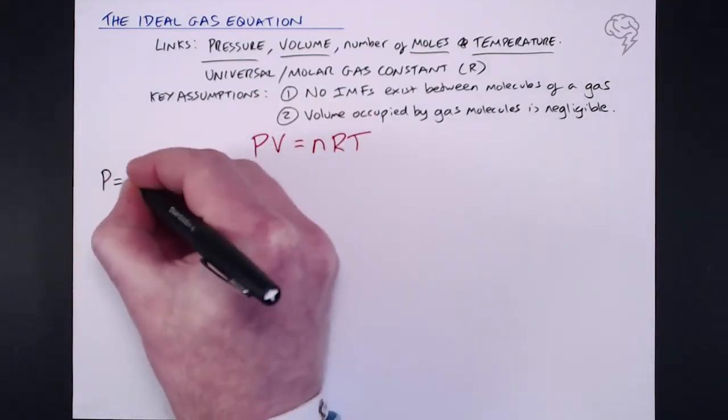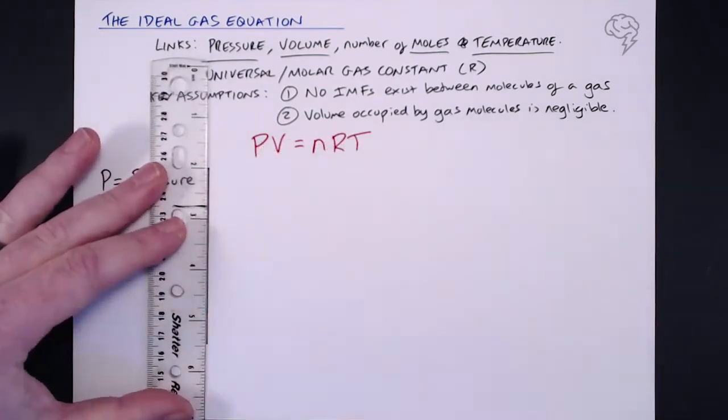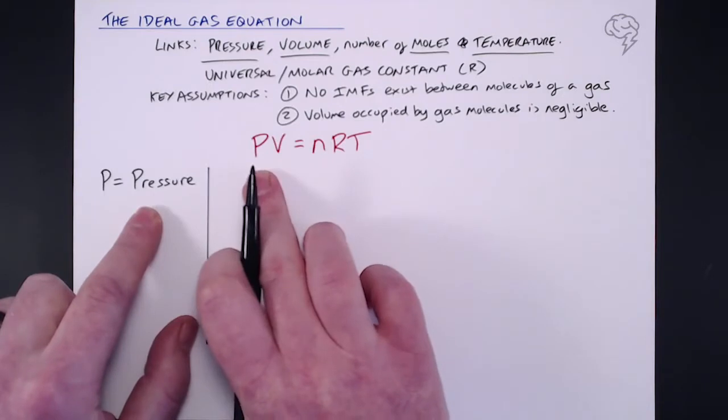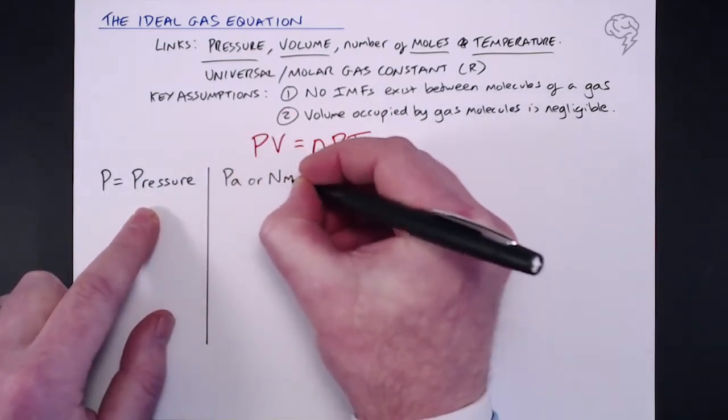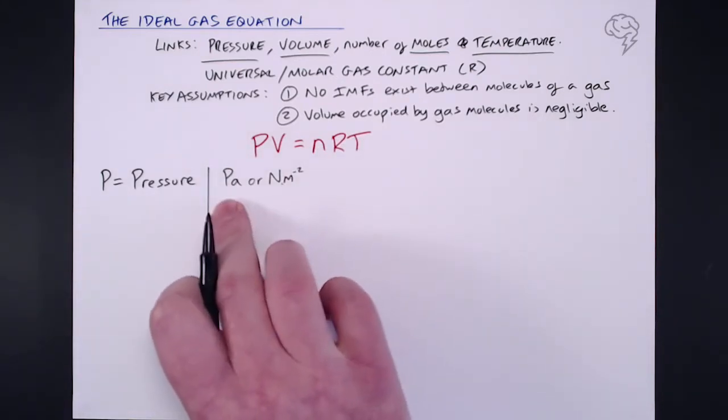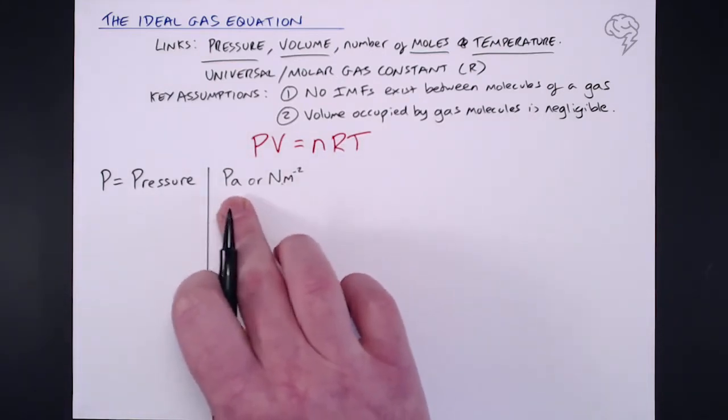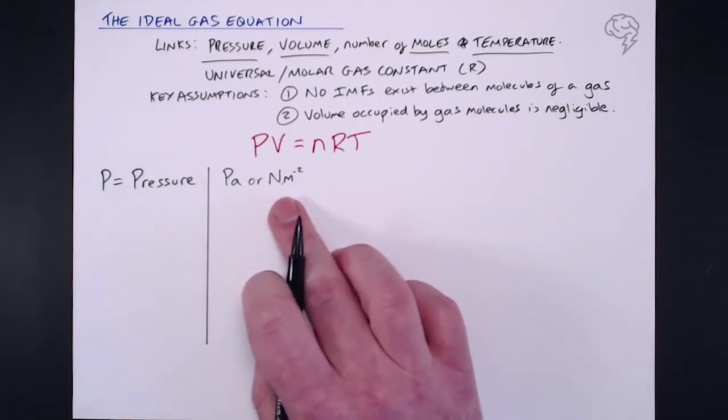Their units are all important when it comes to using this equation. So we'll start with pressure. So our pressure, P, must be measured in pascals or newtons per metre squared. Now what this means is that these are very small units, they are equal to each other. So one pascal equals one newton per metre squared.